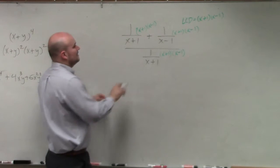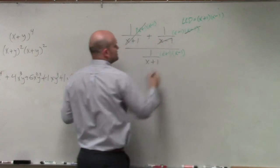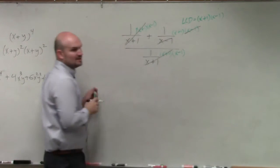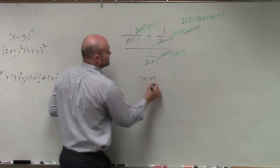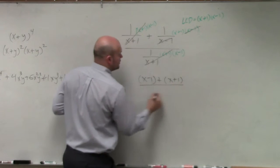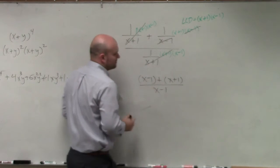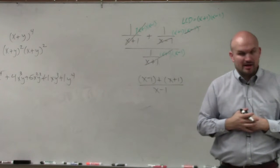Now watch what happens. x plus 1's divide out, x minus 1's divide out, x plus 1's divide out. So that leaves me with x minus 1 plus x plus 1 all over x minus 1. Now I still have a fraction, but at least I don't have fractions in the numerator and the denominator, right?